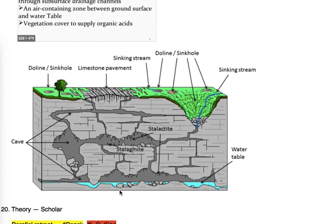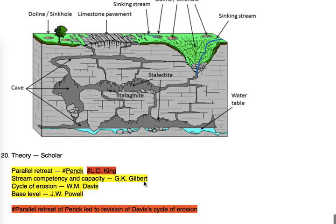That is enough. We will also cover karst topography in detail later. But here our focus is to solve important topics. Parallel retreat theory is given by L.C. King and also by Penck. Parallel retreat was originally given by L.C. King, but Penck also revised the Davis cycle of erosion and gave a second theory.